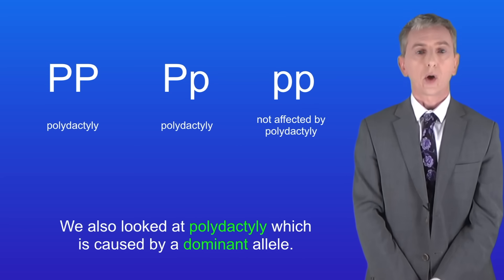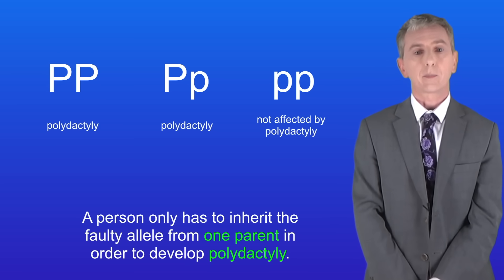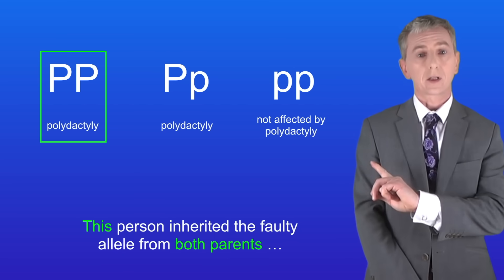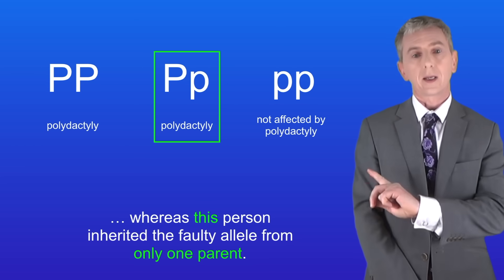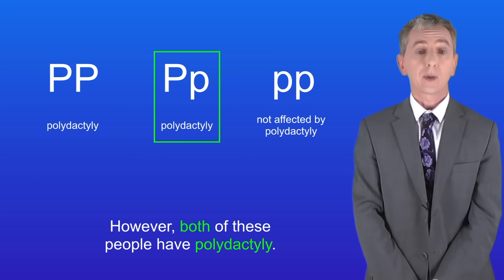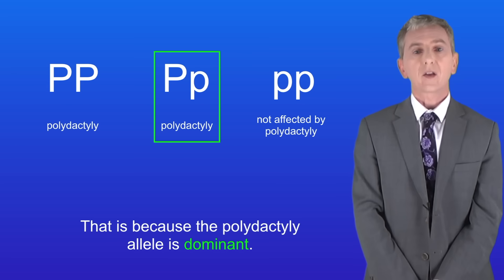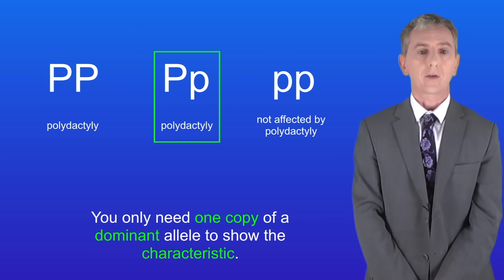We also looked at polydactyly, which is caused by a dominant allele. Remember that a person only has to inherit the faulty allele from one parent in order to develop polydactyly. So this person inherited the faulty allele from both parents whereas this person inherited it from only one parent. However both of these people have polydactyly because the polydactyly allele is dominant — you only need one copy of a dominant allele to show the characteristic.